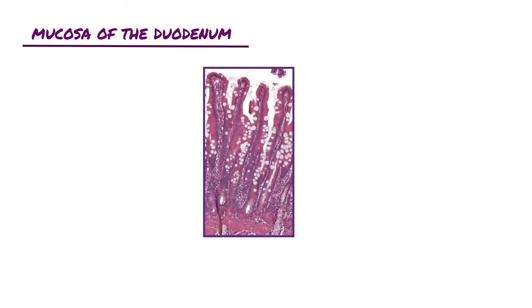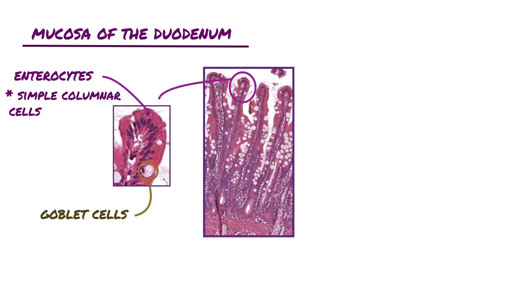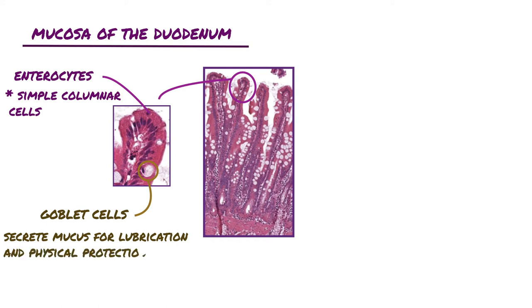Looking at the mucosa of the duodenum, densely covering the entire mucosa of the small intestine are short mucosal outgrowths called villi that project into the lumen. These finger- or leaf-like projections are covered by a simple columnar epithelium of absorptive cells called enterocytes, with many interspersed goblet cells which secrete mucus for lubrication and physical protection of the intestinal epithelium. Each villus has a core of loose connective tissue that extends from the lamina propria.